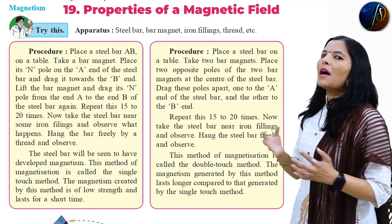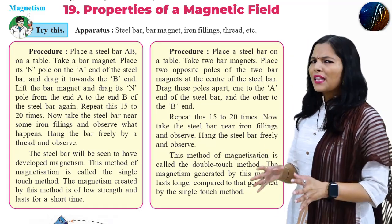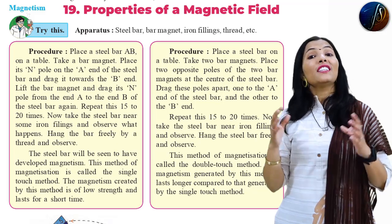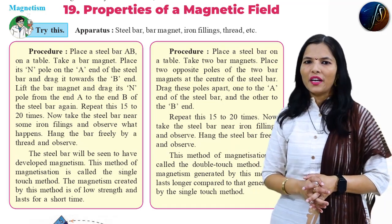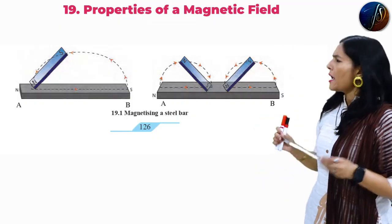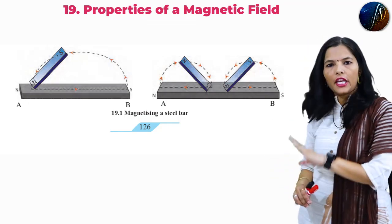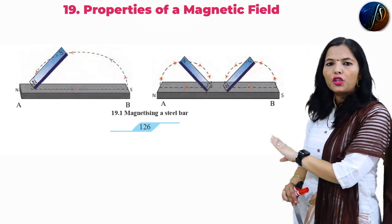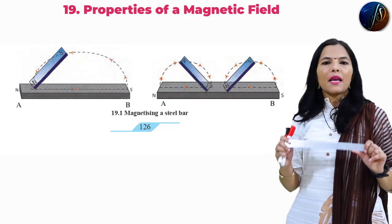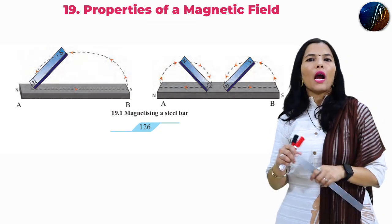Now what is the double touch method? It is the same method — the same apparatus. As you can see in your textbook, we repeat the same experiment, but instead of one bar magnet we have to take two bar magnets.